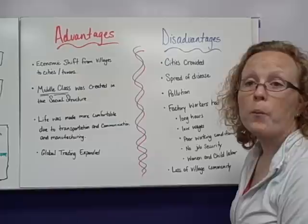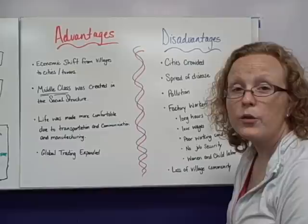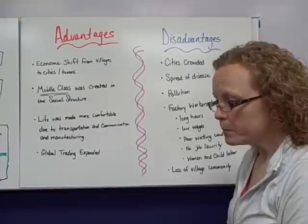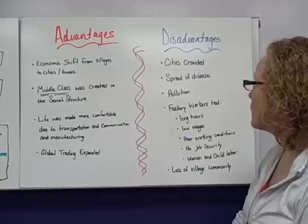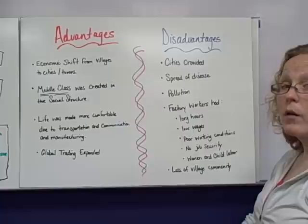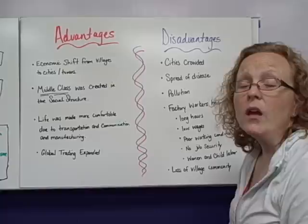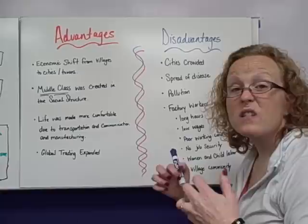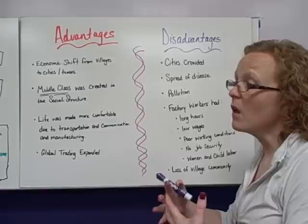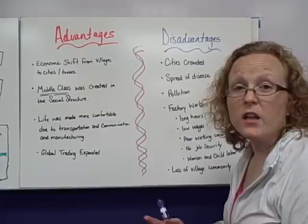Pollution was another major disadvantage. The factory systems created pollution from coal and dust exhausted into the air, and waste put into water as well — this was the start of where pollution came from. Factory workers also had long hours, low wages, and poor working conditions. As discussed when we talked about the Victorian era, factory windows were closed, it was dusty and hot with no air conditioning, and workers worked from sunup to sundown, rarely seeing daylight.